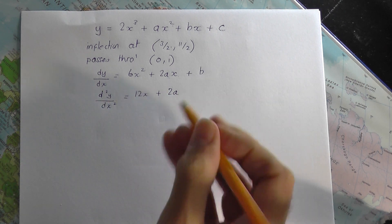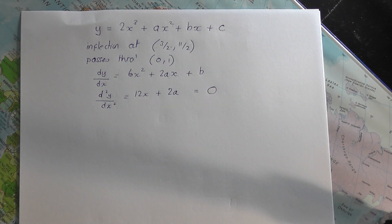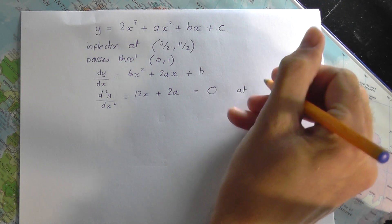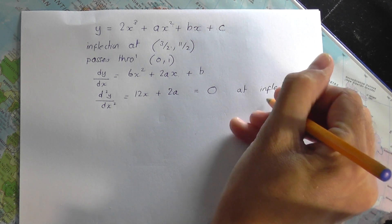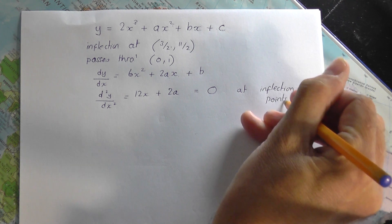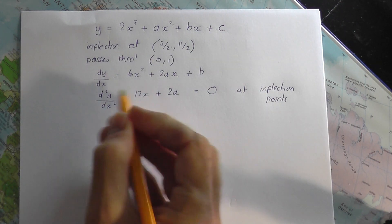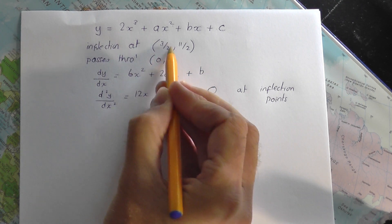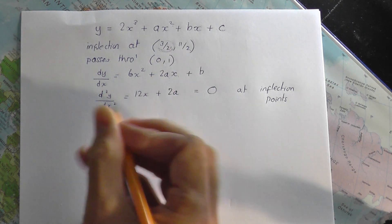Now, for stationary points, it must be true, if you recall previous work, that that is equal to 0. So, at inflection points, not stationary points, at inflection points, so that must be true for inflection points. Well, I do know information about the inflection point. It is 3 over 2, 11 over 2, so I know the x value of the inflection point.